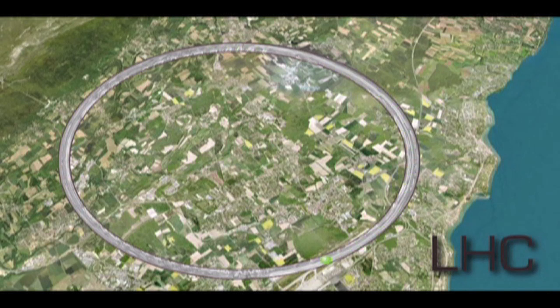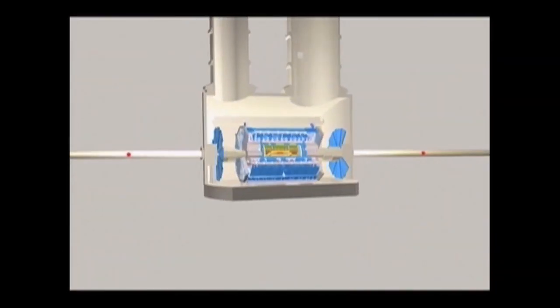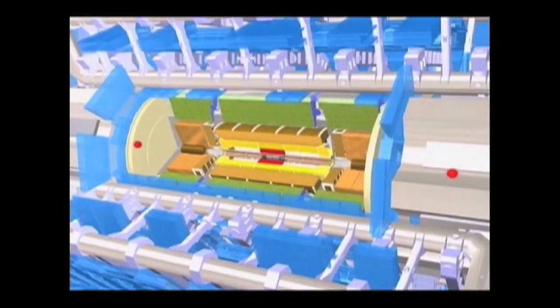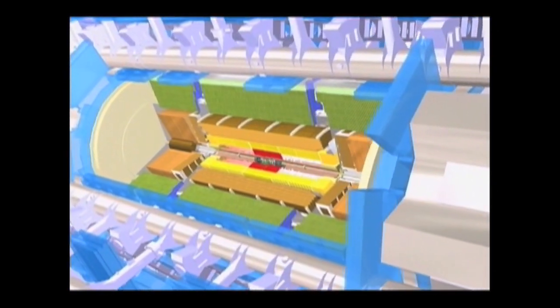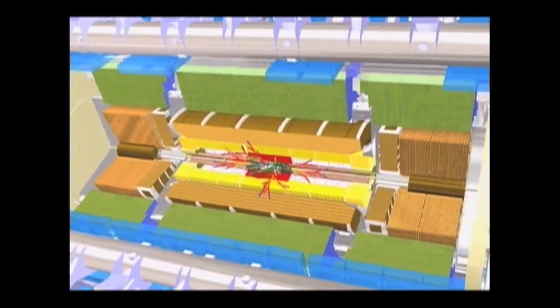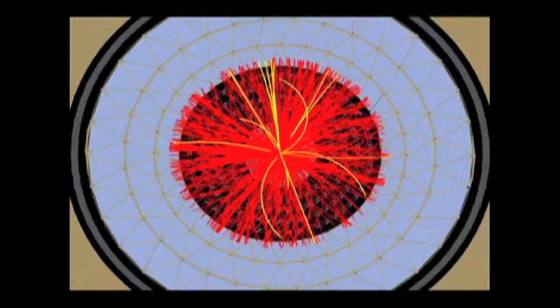The Large Hadron Collider is on track to be producing high-energy collisions by the end of the month. Two particle beams will be made to collide at an energy of 7 tera electron volts, which is 7 million million electron volts.